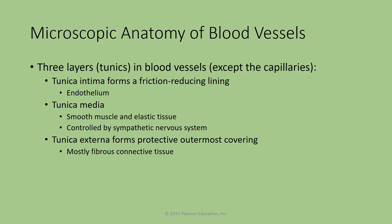Except for the capillaries, all of the other blood vessels have three layers. These layers do have names. They're comprised of different types of tissue. The inner layer is the tunica intima — this is the layer that the blood will be flowing right up against. The tunica media is the middle layer, and this is composed mostly of smooth muscle.